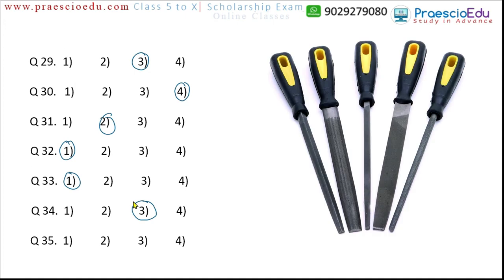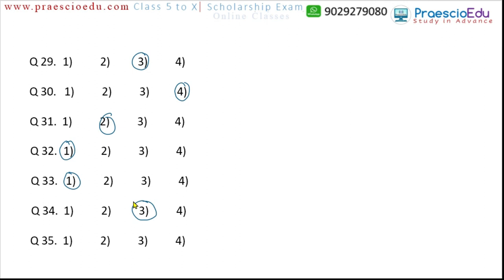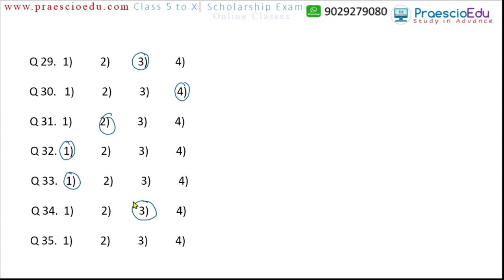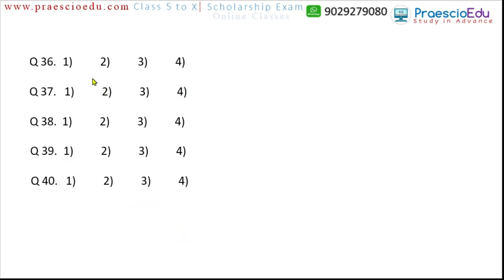Question 35: hammer, saw, file, and spoon. A file is a tool used for smoothing or sharpening metal edges. Saw and hammer are also tools. But spoon is a kitchenware item, not a tool. So option four, spoon, is the different one. Question 36: cucumber, tomato, carrot, and gawar. Gawar (cluster beans) is a vegetable that grows differently from the others. So option four, gawar, is the different one.